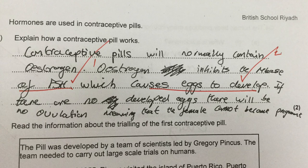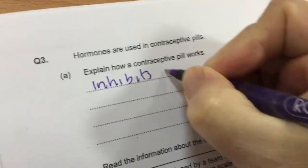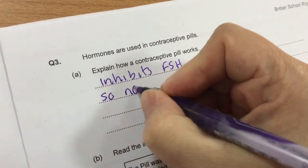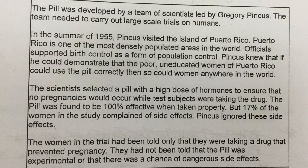I've given him the mark anyway. His next sentence goes on to clarify, which is good. He says: if there are no developed eggs, there will be no ovulation, meaning that the female cannot become pregnant. The downside of that extra clarifying sentence is it's more time — he's using time to expand on a sentence which, if he'd written more carefully in the first place, would save him time in the exam. And this is how to word your answer concisely.